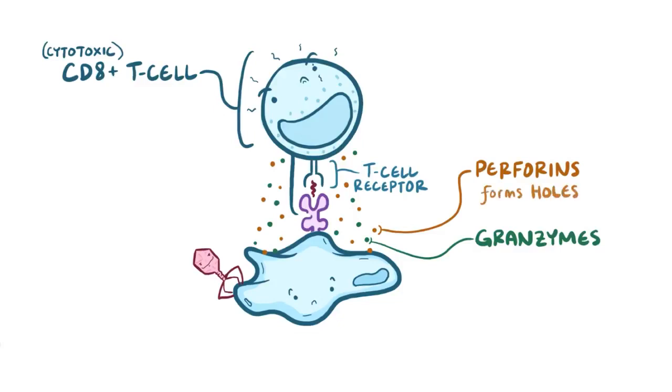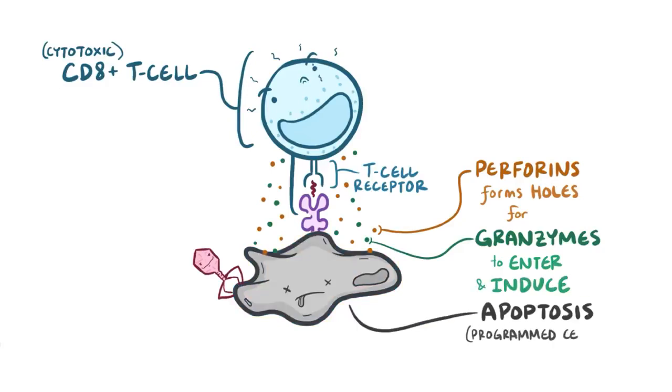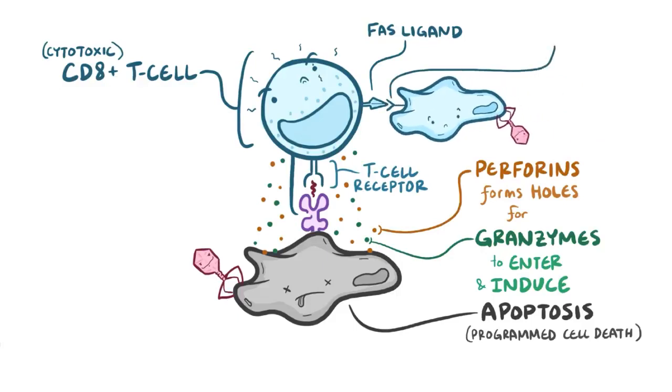Perforin forms big holes in the infected cell, and that allows granzymes to enter the cell. Once inside, the granzymes induce apoptosis, or programmed cell death. And as if that weren't enough, the cytotoxic T cells have a protein called Fas ligand on their surface, and it binds to a molecule called Fas on the surface of the infected cell. When these two combine, it triggers a cascade of signaling events inside the target cell that also leads to apoptosis.